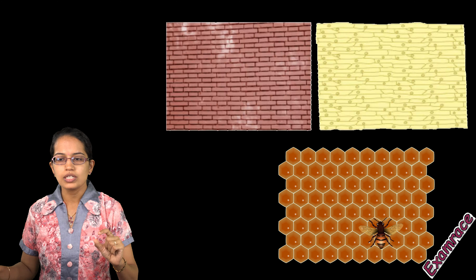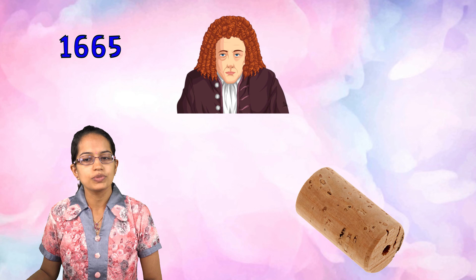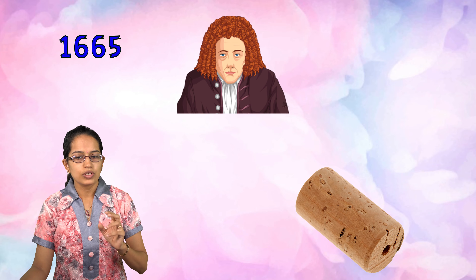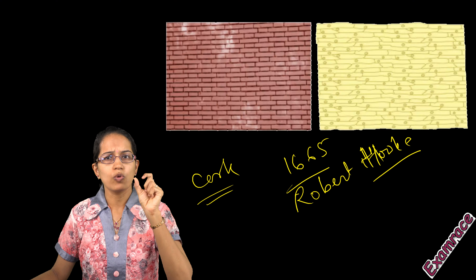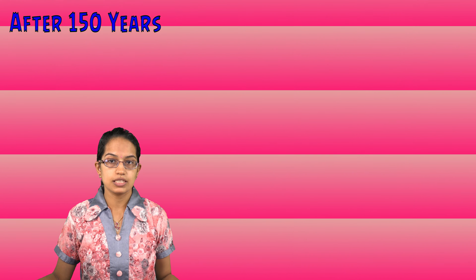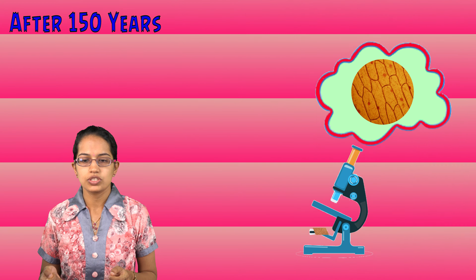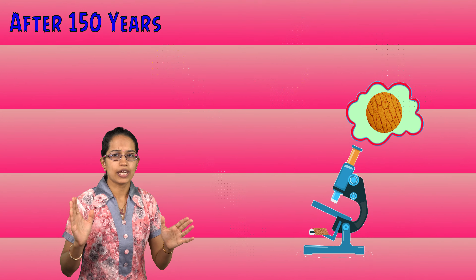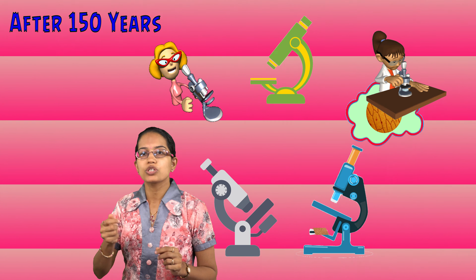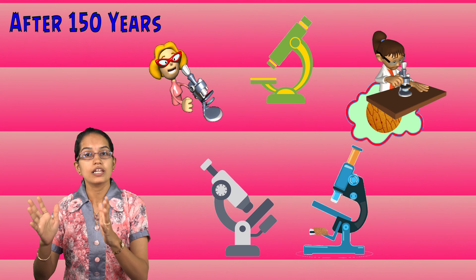This cell was first observed in cork, and cork was obtained from the bark of a tree. This cork was seen back in 1665 by Robert Hooke. When Robert Hooke observed the cork cell, these cells were actually dead cells and he could observe only minute traces of those. Later on, nearly 150 years after he discovered that, there were very good mechanisms to observe cells microscopically with higher magnification, and therefore huge varieties of microscopes were developed which could go into very minute details.